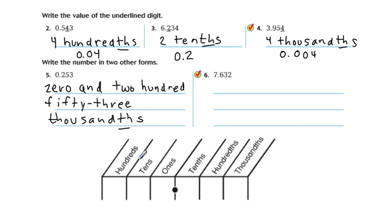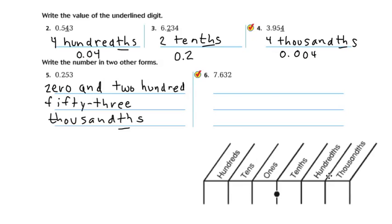So how do we write the expanded form of this number? First of all, I'm going to need a little bit more room, so I'm going to take my place value chart and move it over so I have a little bit of room down here. And then I'm going to use my place value chart to help me figure out how many of these things are in each of the places. So it's 0.253.